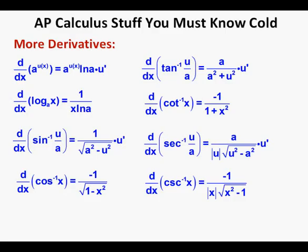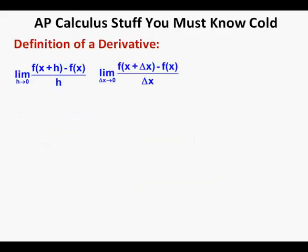Definition of a derivative: the limit as h approaches 0 of [f(x+h) minus f(x)] over h, or alternatively the limit as delta x approaches 0 of [f(x + delta x) minus f(x)] over delta x.